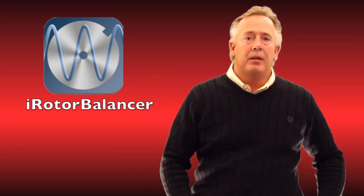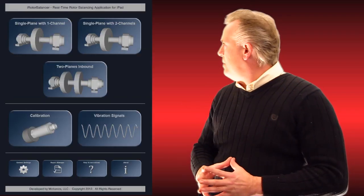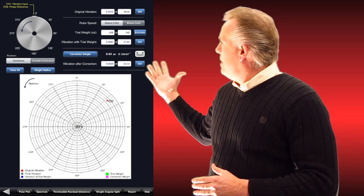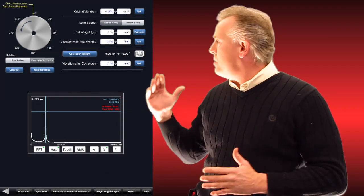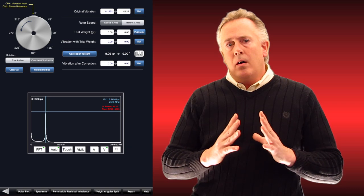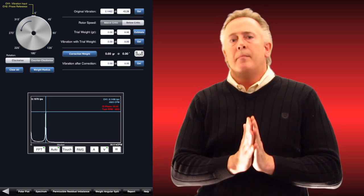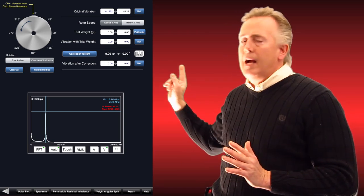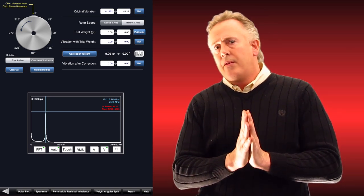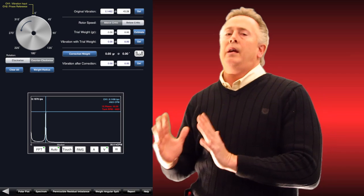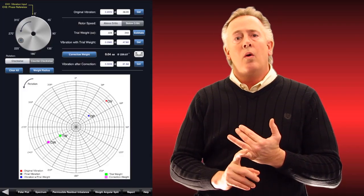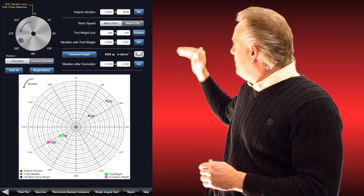I also want to show you our application on balancing. This is what the front page of the balancing app looks like. When we open the app, we can look at both the polar plot and the spectrum at any given time while we're balancing. This achieves two things: one, if we have multiple frequencies interfering with what we're trying to balance at the one times running speed, we can dial in with our spectrum right into the running speed and make sure that's all we're looking at. If we're balancing a 3600 RPM motor or pump, we're only looking at 3600 RPM. Then we can simply click a button, swap back to the polar plot, and immediately know where our heavy spot is.